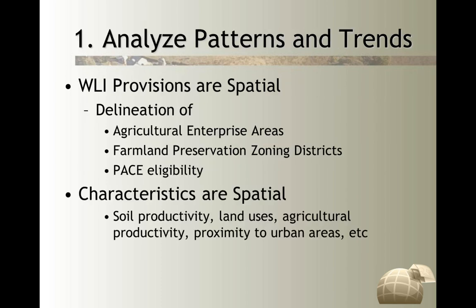Going back to my first bullet: using GIS to analyze important patterns and trends — to educate our policy makers and citizens, and to understand how we might develop policies that actually work based on what landscape patterns and trends are telling us. The Wisconsin Working Lands Initiative provisions are also inherently spatial. The law talks about the delineation of geographic areas — whether they're ag enterprise areas, farmland preservation zoning districts where farmers are eligible for tax credits, or the program on ag conservation easements eligibility. All the criteria for PACE eligibility are very spatial in nature and can be mapped with GIS.